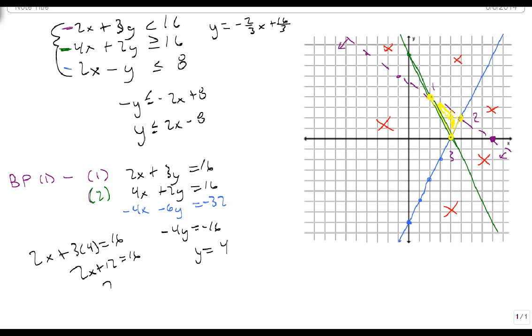2x plus 12, so 2x is 4, so x is 2. And notice, that's this point right here. That's exactly where we were expecting it, 2, 4. And notice, I found that by using my equations to get it.